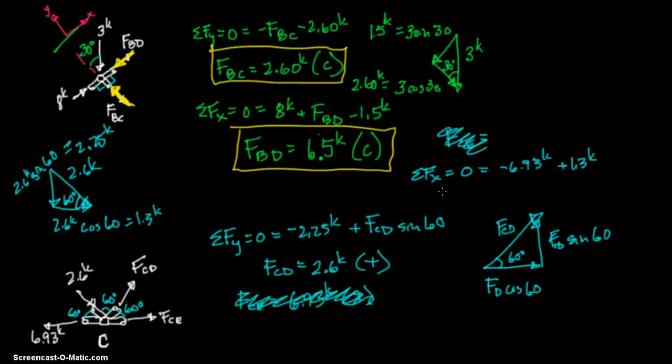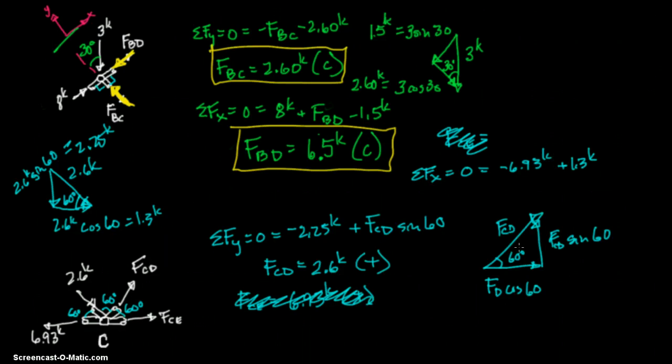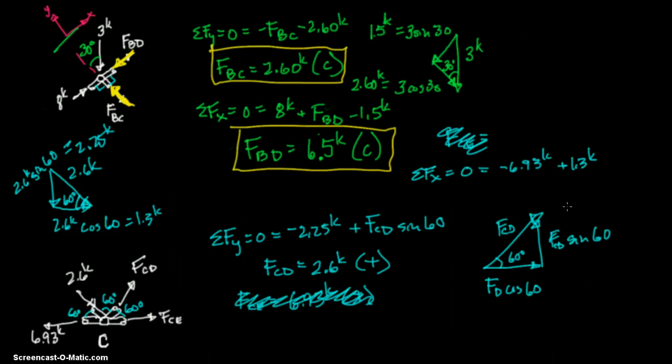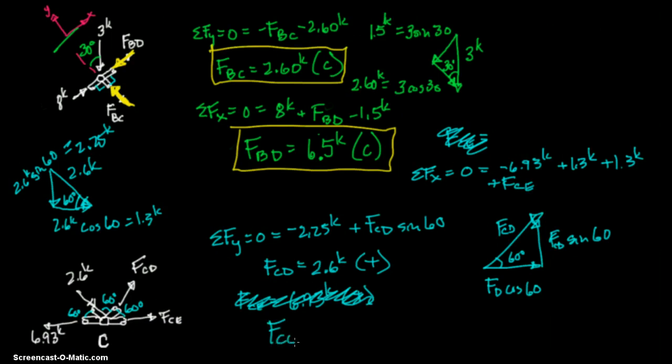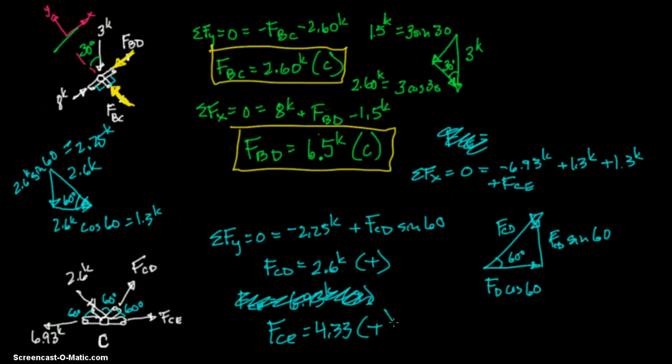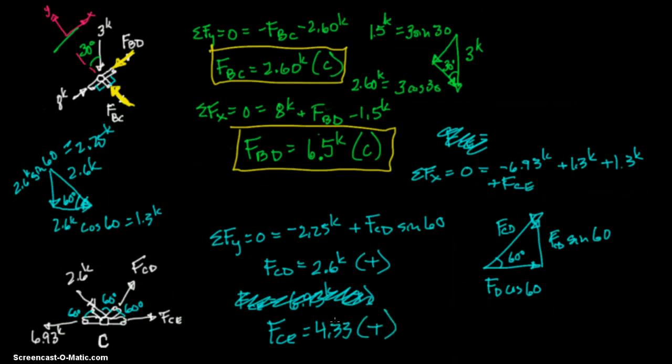Let's work it out. You have negative 6.93. You have plus 1.3. And then you're also going to have FD cosine 60. That's 2.6 cosine 60. Equals 1.3. Plus another 1.3. And then you also have FCE. And that's also plus. Let's do the math. And you actually get FCE equals 4.33 in tension. There it is. We're going to transfer that over to the next page.